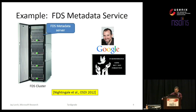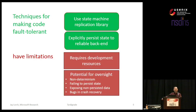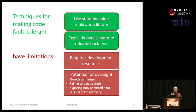Many of you probably have had similar experiences. You've written a service, it starts to become popular, and you think maybe I should have written that to be fault-tolerant. So you can go back to the drawing board. There are various ways to take an existing service and change it to be fault-tolerant: you can recode it as a deterministic state machine and use state machine replication, or you can insert calls to persist state to a reliable backend like a replicated database. But this takes time to write and time to debug, because there are many pitfalls.